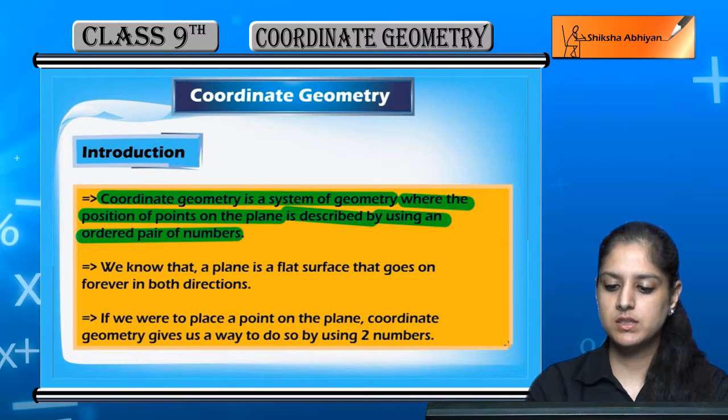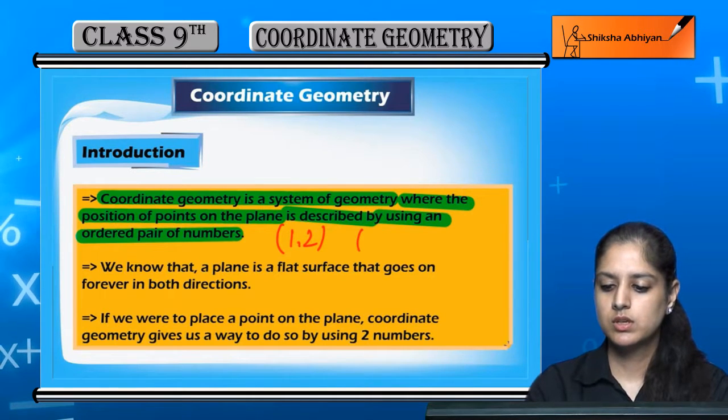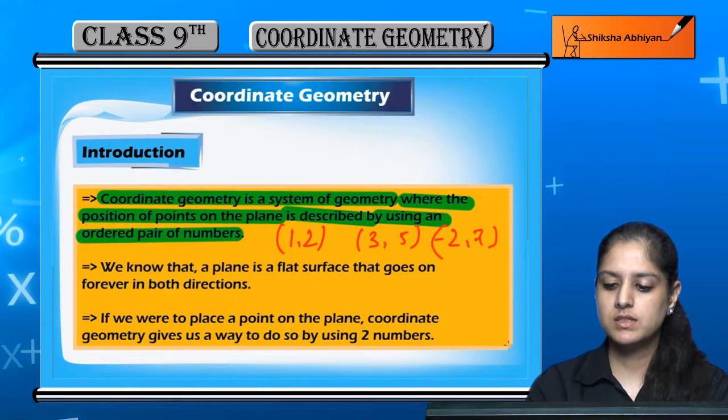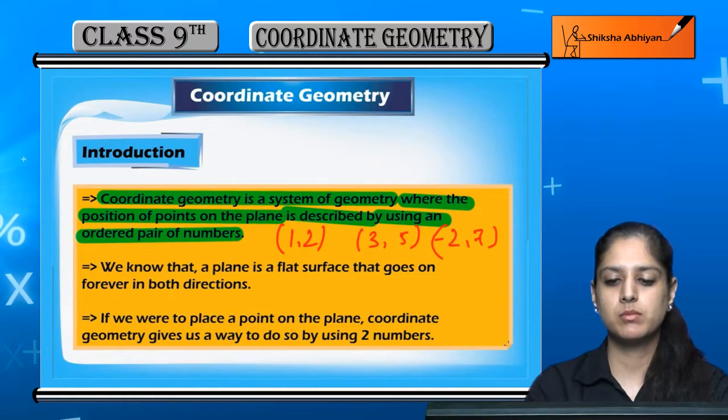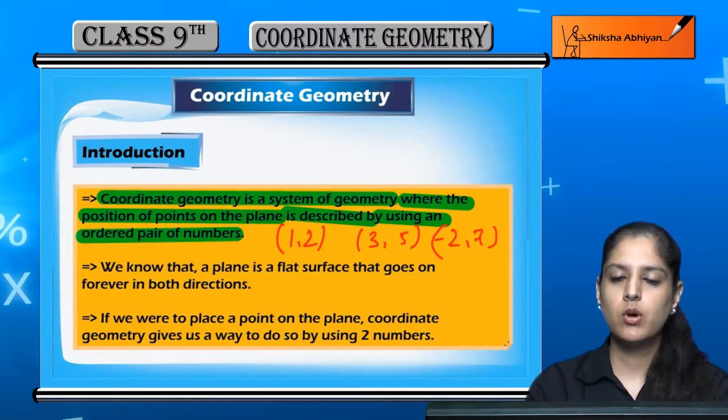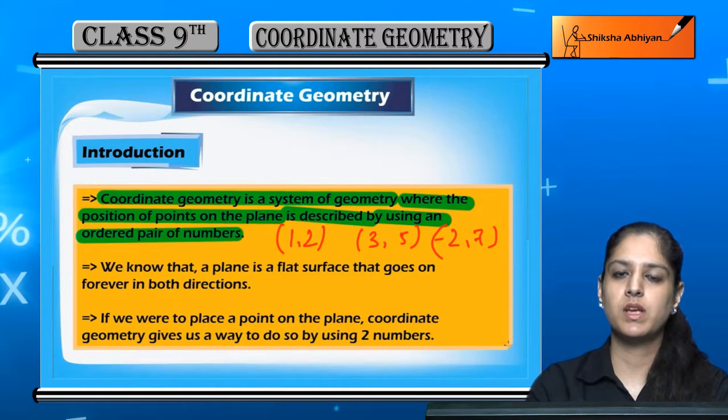Ordered pair means one, two, three, five, minus two, seven. These are ordered pairs of numbers. We use them to define the position in the plane.